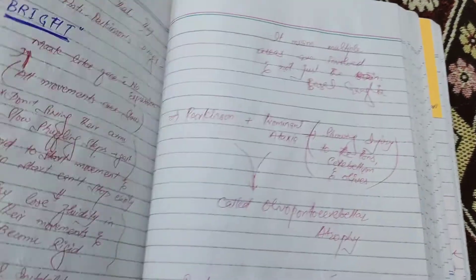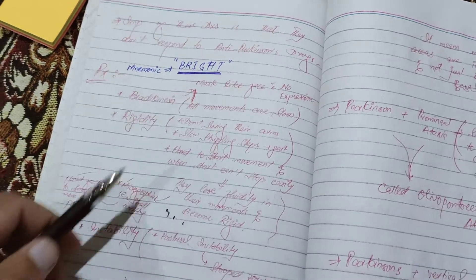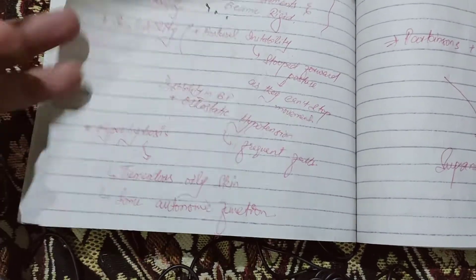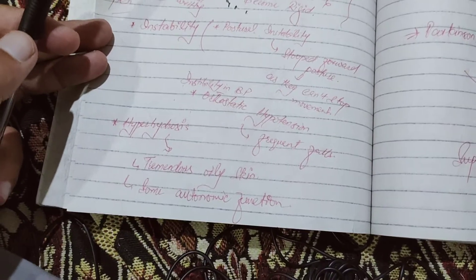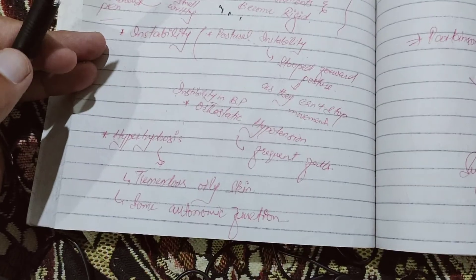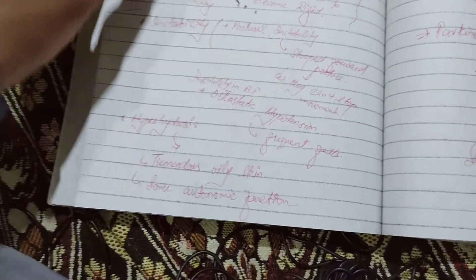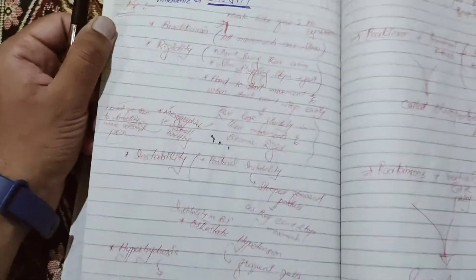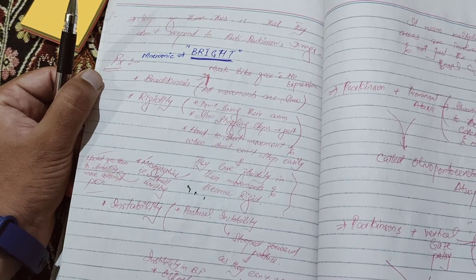The glabellar reflex will be positive in Parkinson's disease. Moving on, H stands for hyperhidrosis. These patients will have very oily skin — tremendously oily skin — mainly due to autonomic dysfunction. They will also have lots of sweating and lots of oily skin.